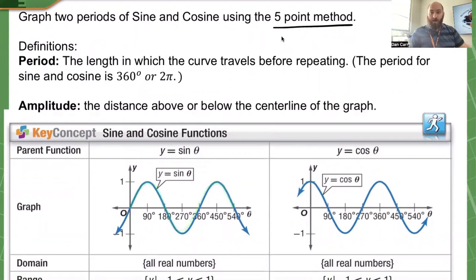This is the graph of a sine function. This is called a periodic function because it's going to continue on forever. It's going to do this whole repeating pattern, going up and down like these waves. The period is the length in which the curve travels before repeating.